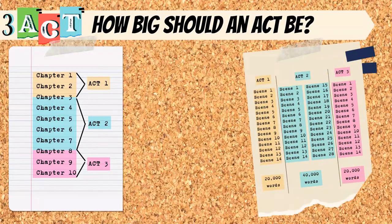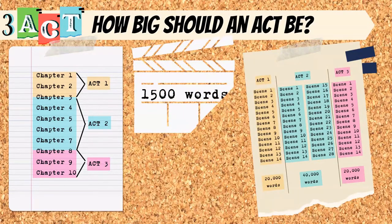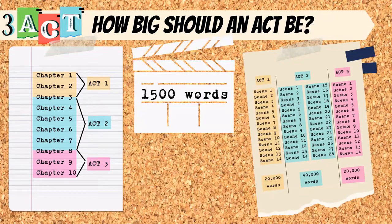We can also break each act down by scenes. There's no hard and fast rule as to how long a scene should be, but a good rule is to make each scene about 1,500 words. There are also no concrete rules for how many scenes you should have in a chapter or act — you can have as many or as few as your story demands. Standard convention says the first act should have approximately 14 scenes, which at 1,500 words per scene is about 20,000 words. The second act typically has 28 scenes for a total of 40,000 words.